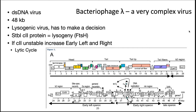The virus bases the decision to lysogenize or lyse upon the health of the host cell. Cells with nutrients are actively growing and have high protease activity, including the protein FDSH, which is a protease. Since the host cell is actively growing, that probably means there are many cells nearby that the virus can infect. The primary regulatory switch for the virus is the C2 protein. If it is active, it will push the virus down the lysogenic pathway; if it is unstable, the virus will enter the lytic cycle.